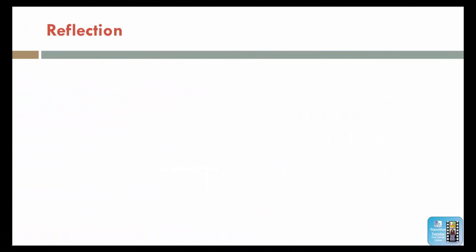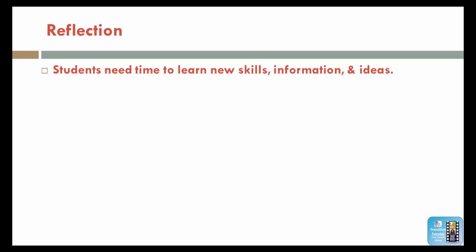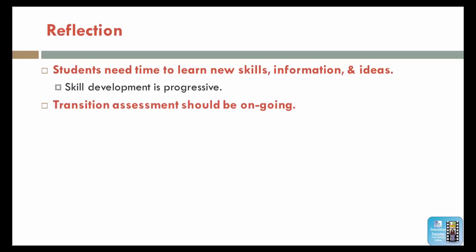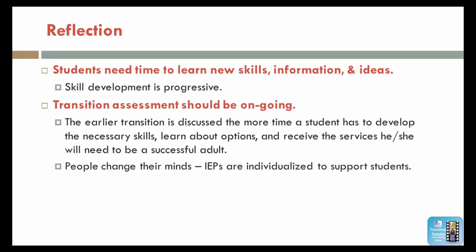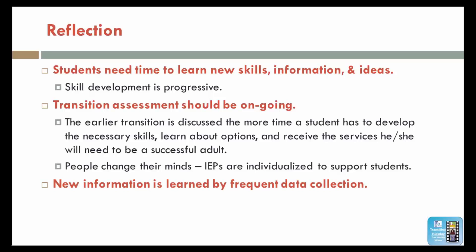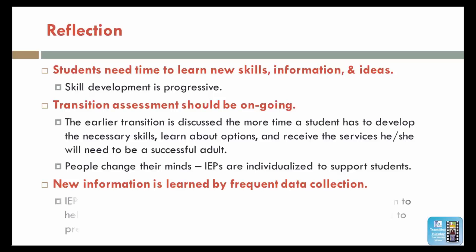Let's do some reflection on the key concepts of going beyond transition compliance. Students need time to learn new skills, information, and ideas. Skill development is progressive. Transition assessment should be ongoing. The earlier transition is discussed, the more time a student has to develop the necessary skills, learn about options, and receive the services he or she will need to be a successful adult. People change their minds. IEPs are individualized to support students. New information is learned by frequent data collection. IEPs are developed based on current data and goals should be written to help students progress to the next level, with the overall goal being to prepare for life after high school.